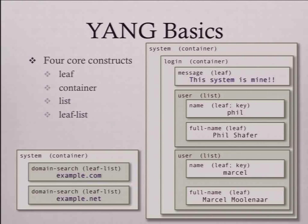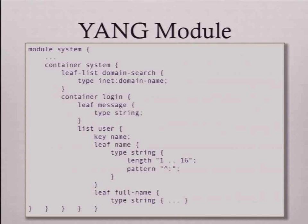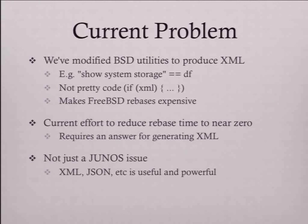To give a quick overview of Yang, there are really four constructs. There are leafs, which are the bottom rung of your organizational tree. There are containers, which are organizational pieces of your tree. There are lists, which are items that can appear multiple times. And there are leaf-lists, which are leafs that can appear multiple times. System and login are containers, message is a leaf, and then there's a list of users which have a key - a leaf that is a key as a name, and then a leaf of full name. On the opposite side, a container has a leaf-list of domain searches.